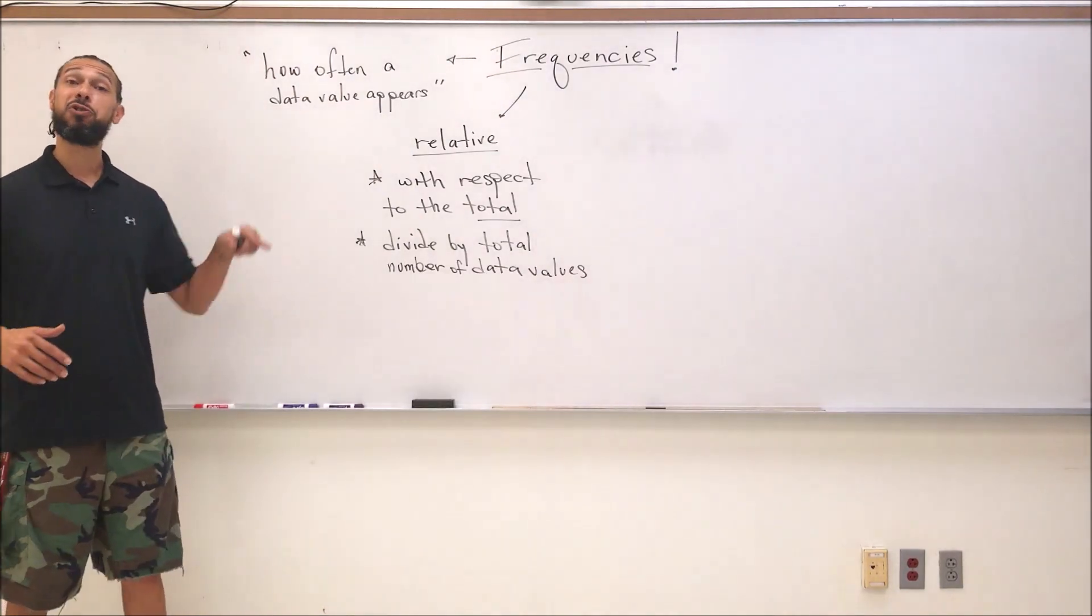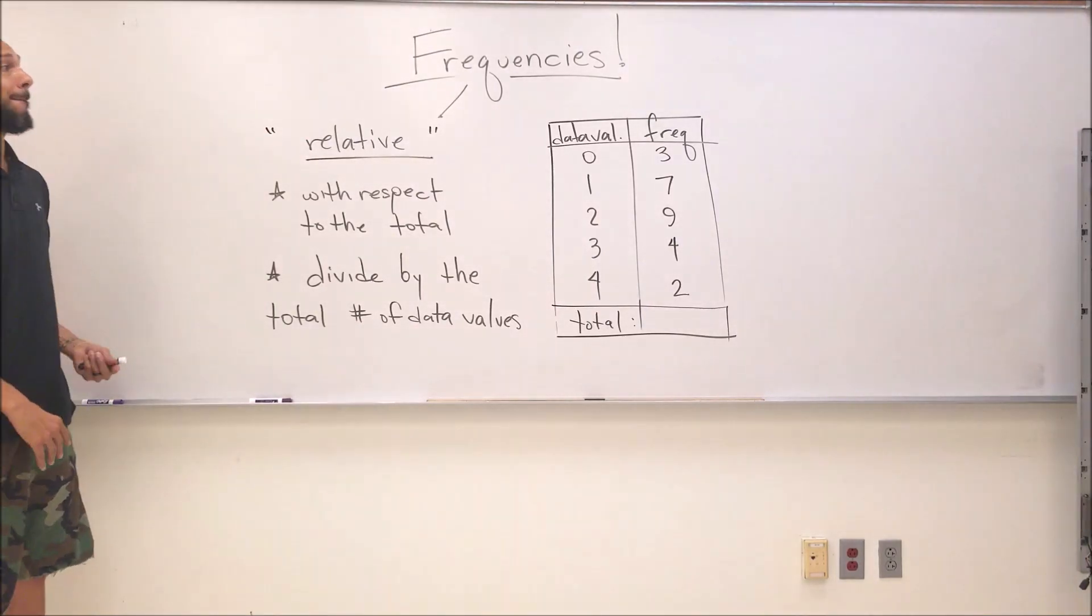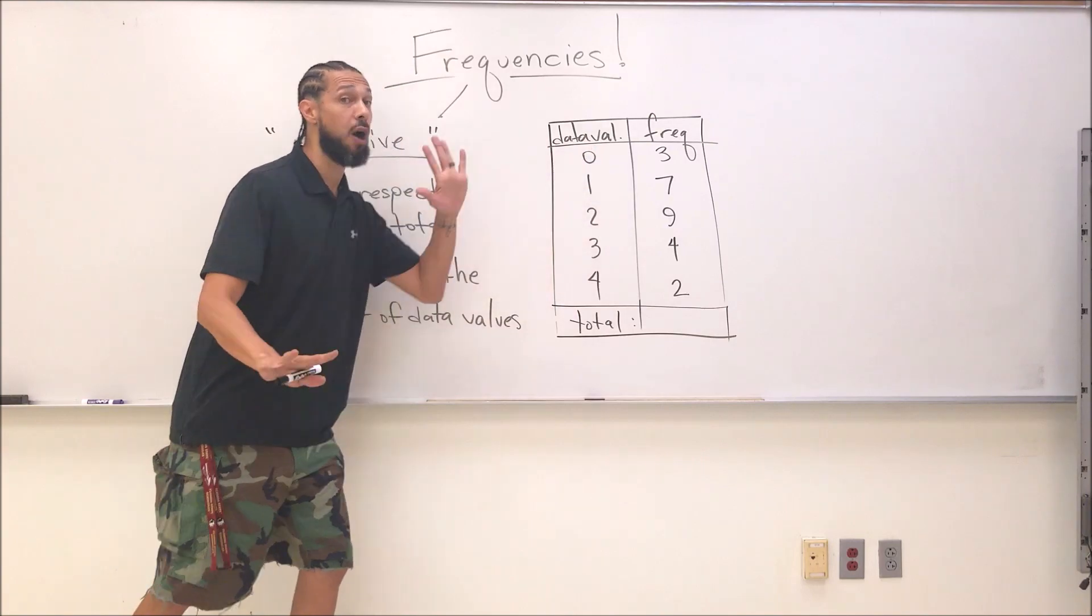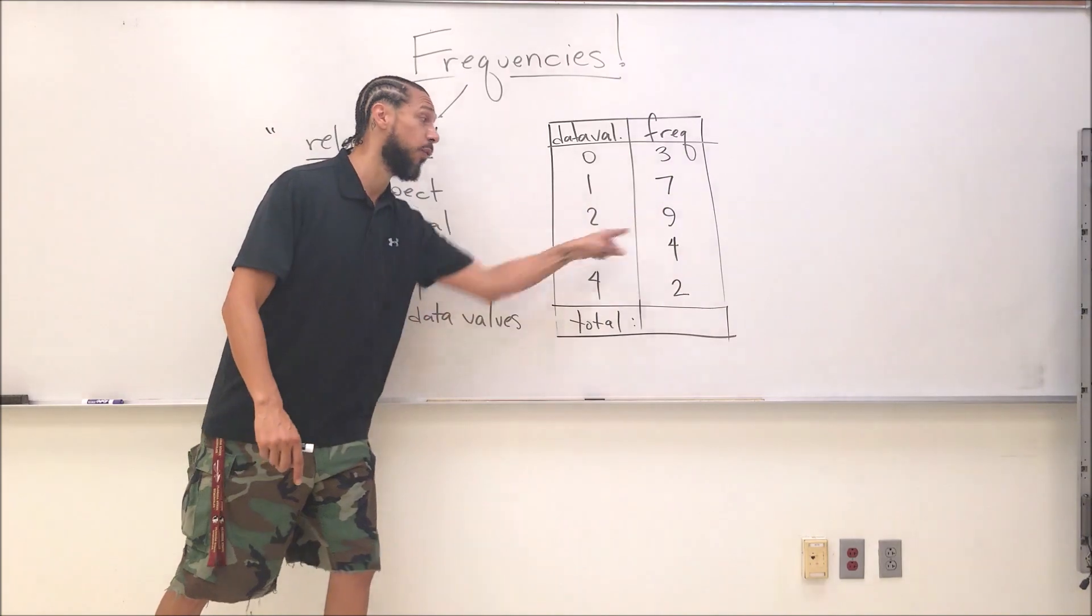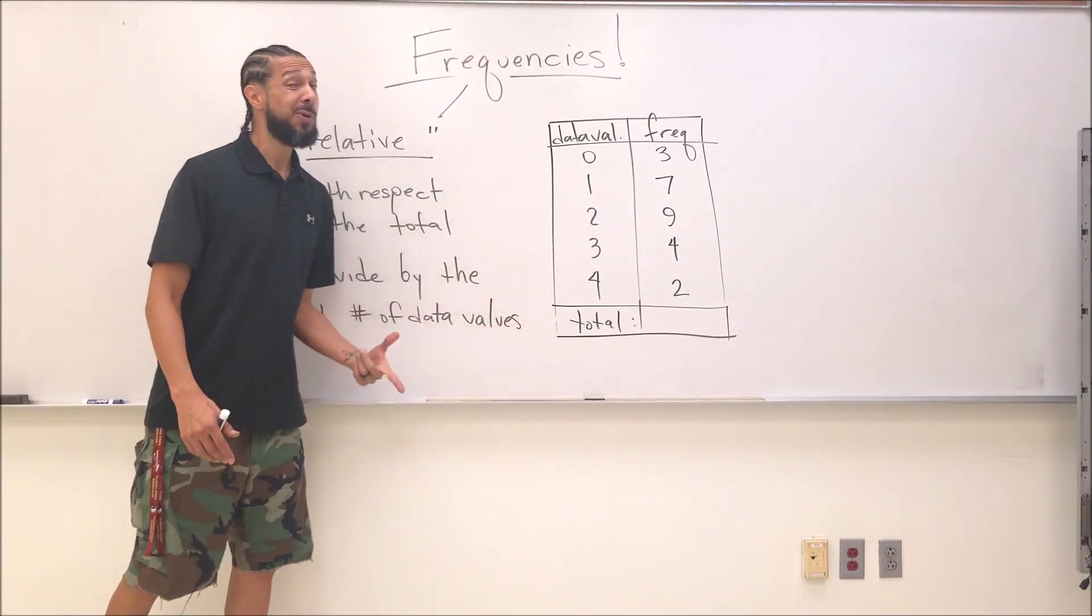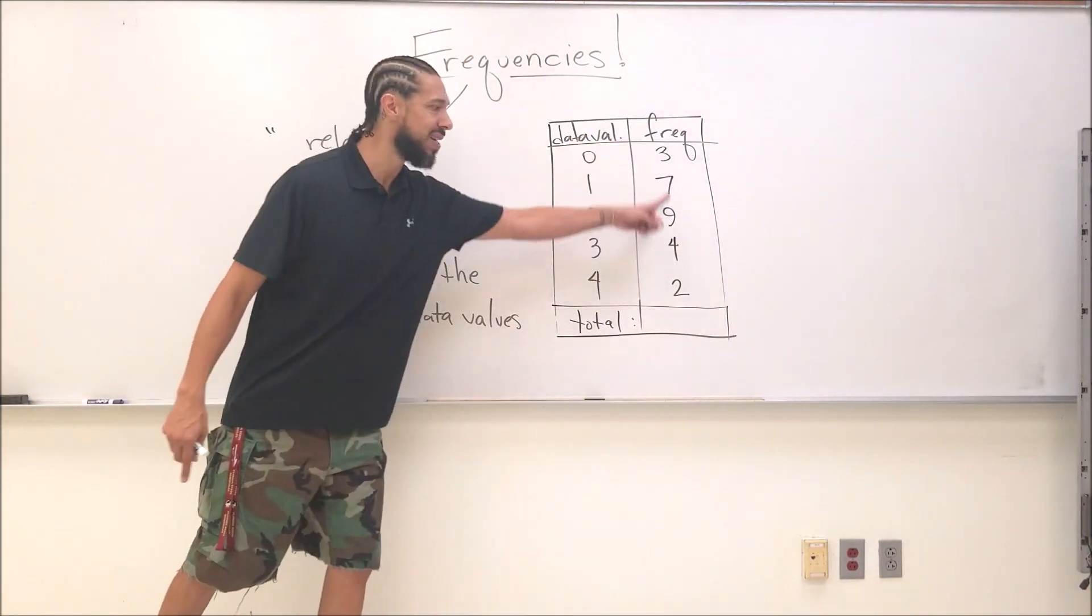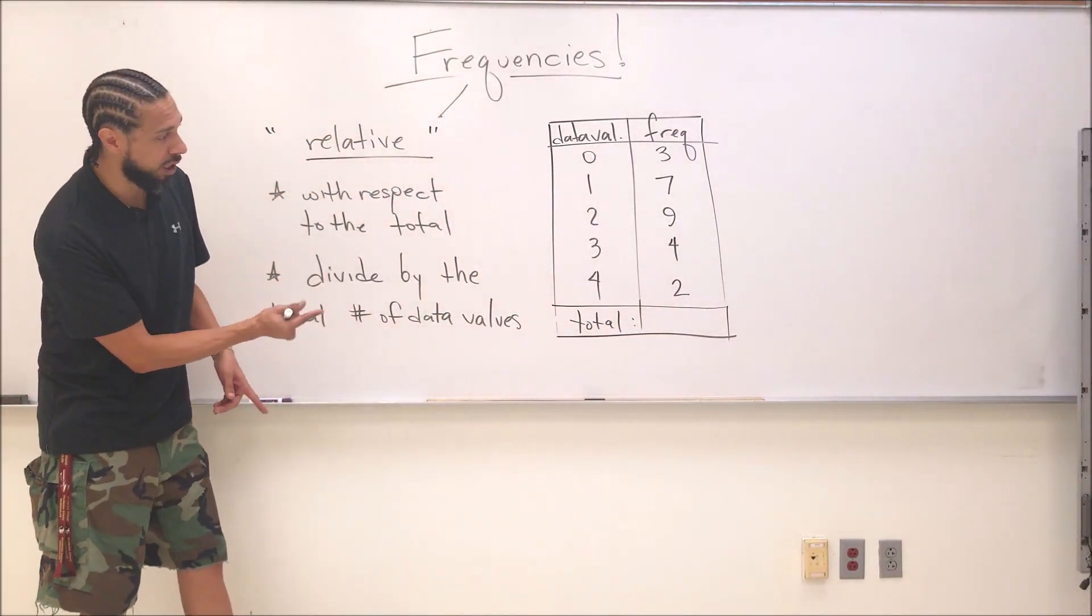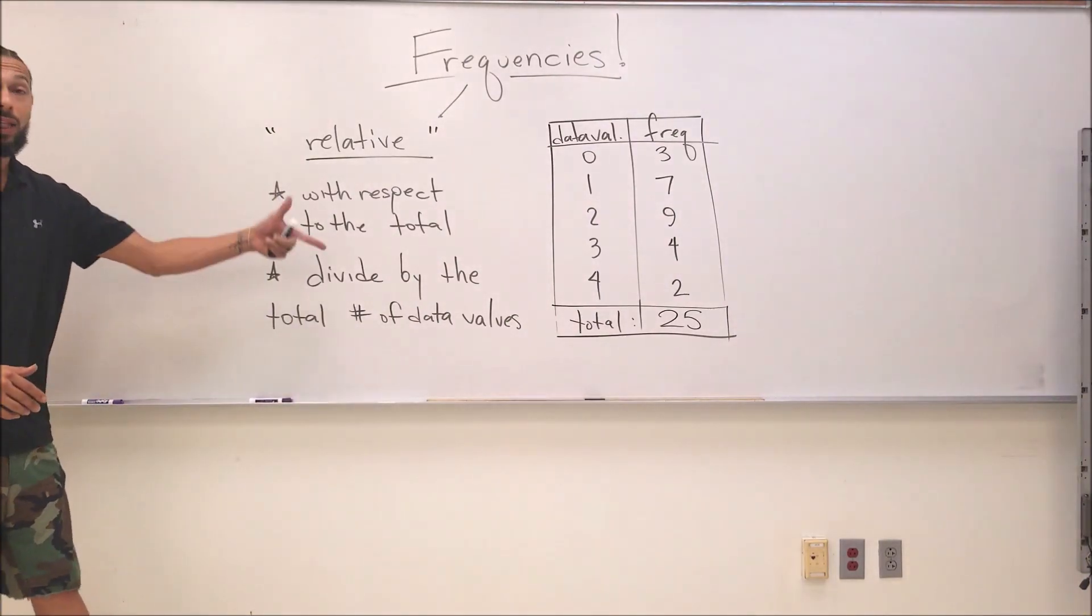Let's get a data set up here. Let's go straight to the frequency chart. Here is our frequency chart based on these data values. I didn't specify exactly what these data values are, but that's okay. I know I have three zeros, seven ones, nine twos, four threes, and two fours. I put a line down here for total on purpose. We're going to need that.